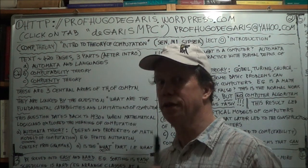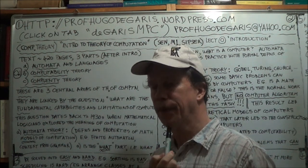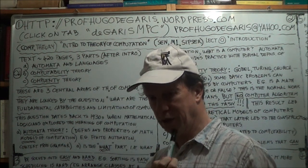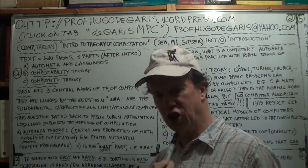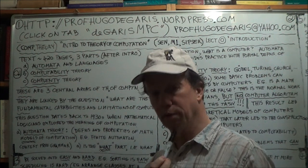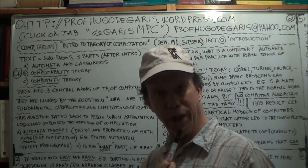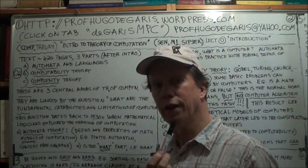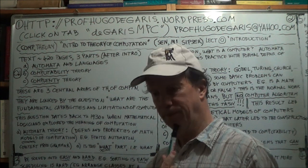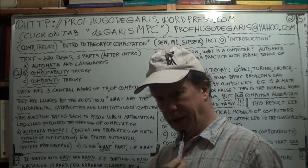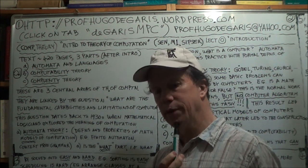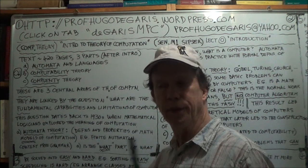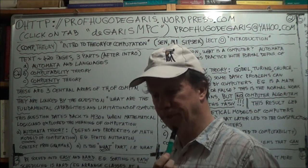You'll hear that name a lot in this course. The famous British mathematician, logician, computer science pioneer — Turing, T-U-R-I-N-G. His famous halting problem — to halt, to stop.